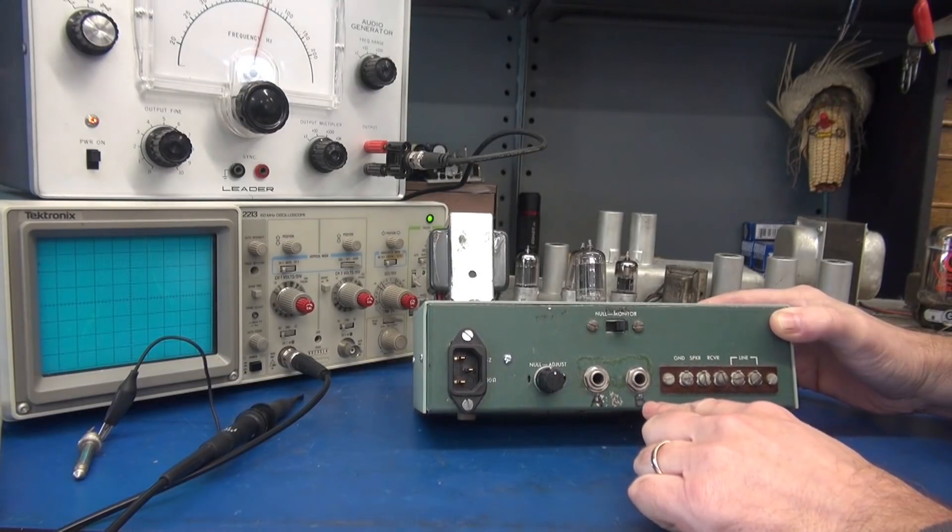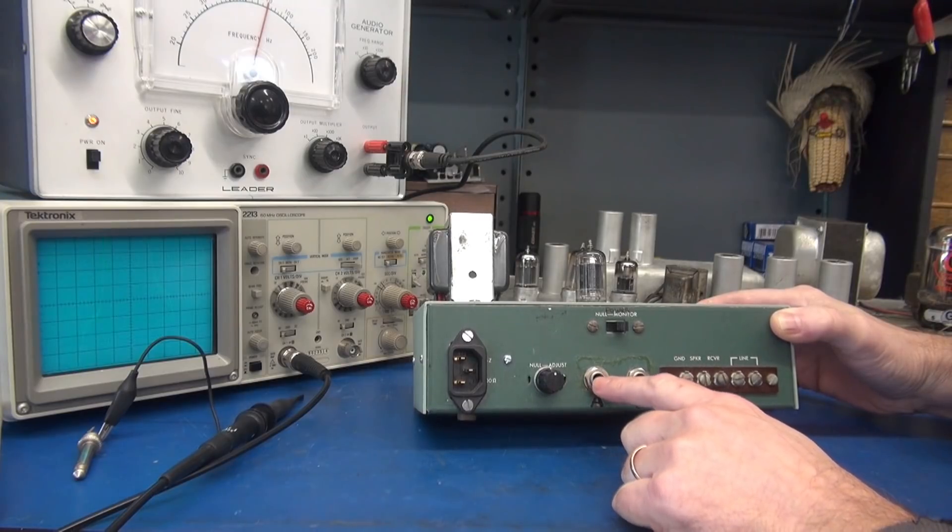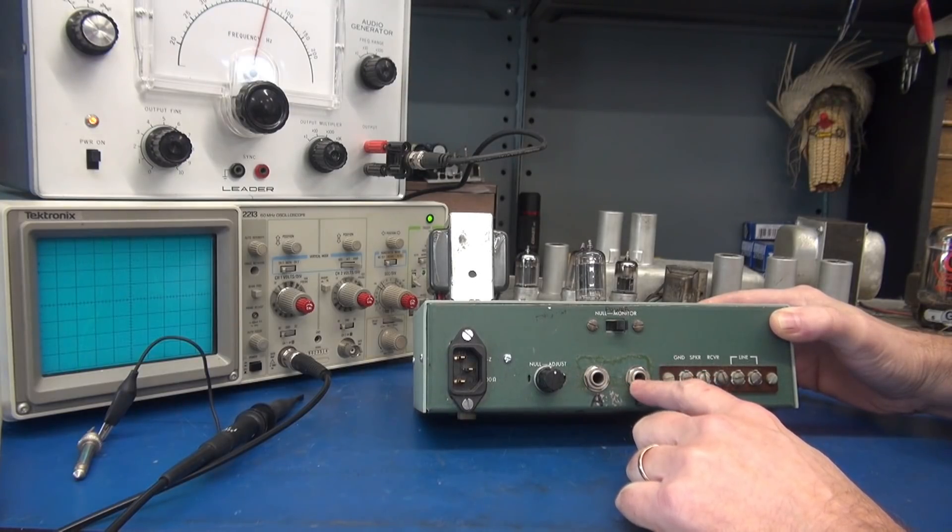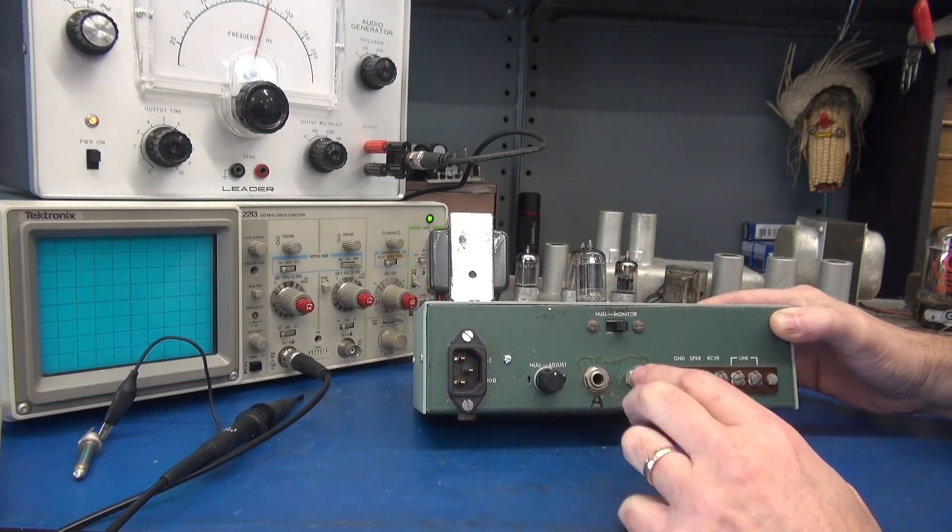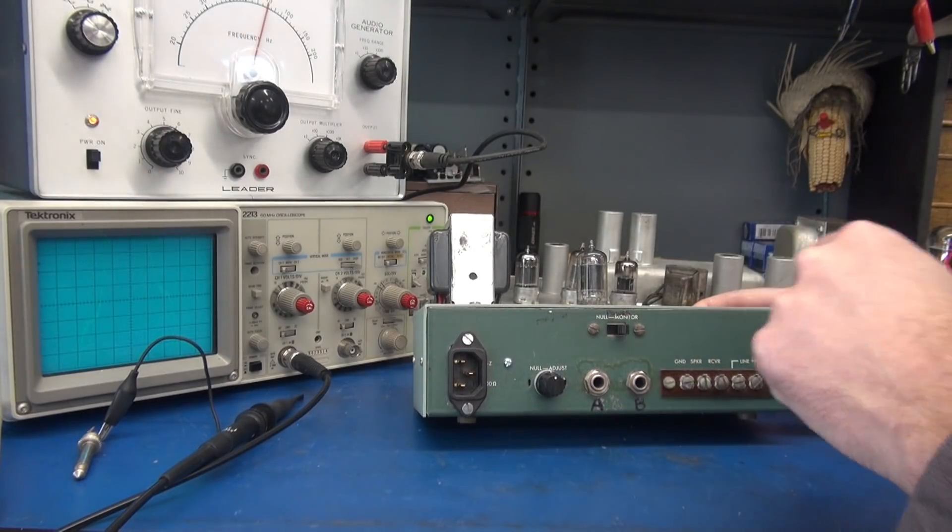Then we have our A and B output. Those are the individual outputs of the triodes. You can either hook these to your oscilloscope, or you can pipe this through into an external amplifier and listen to the signal of that preamp tube.